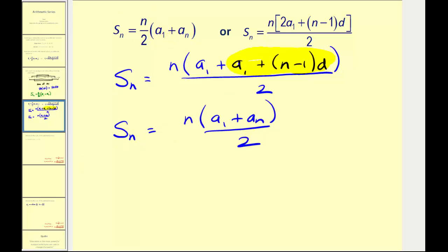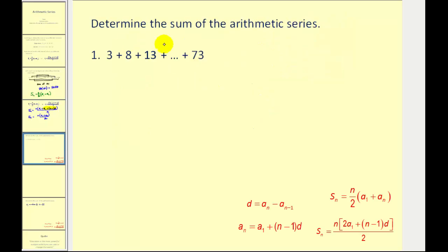Let's go ahead and apply these formulas. Let's say we want to find the sum of this arithmetic series. Let's write down all the information that we know. A sub one is the first term that's equal to three. The last term we'll call a sub n is equal to 73. And we know it's arithmetic so we can find the common difference. Let's go ahead and take eight and subtract three. That would be d equals five. Remember we can choose any term and then subtract the term before it to find the common difference.